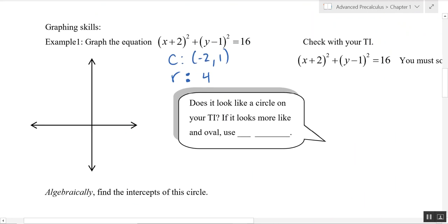I'm going to go to negative two, one, put a point there and label that. I'm going to go up four units, put a point, right four, down four, and left four. And hopefully yours looks better than mine. Should be a round circle.